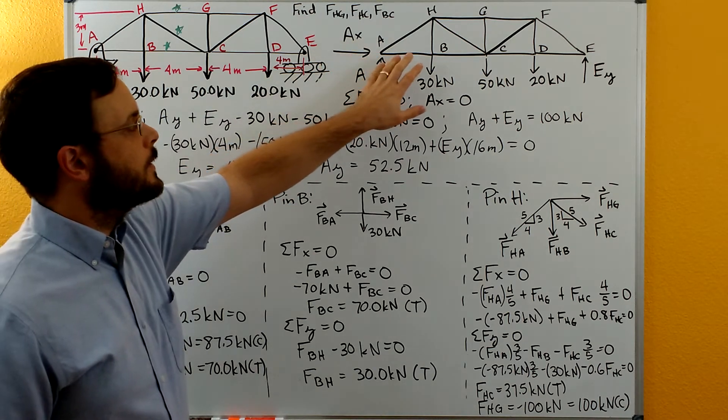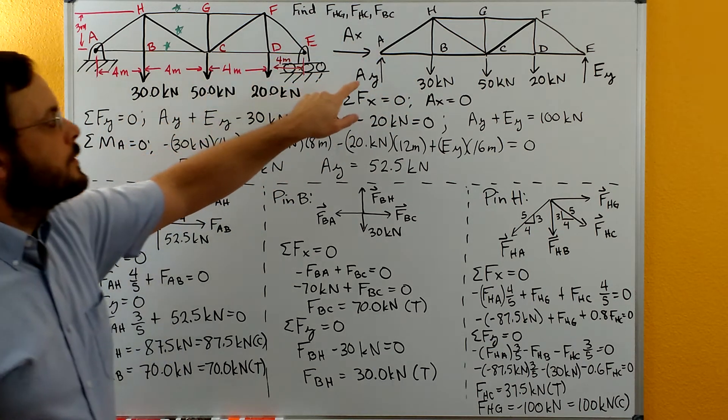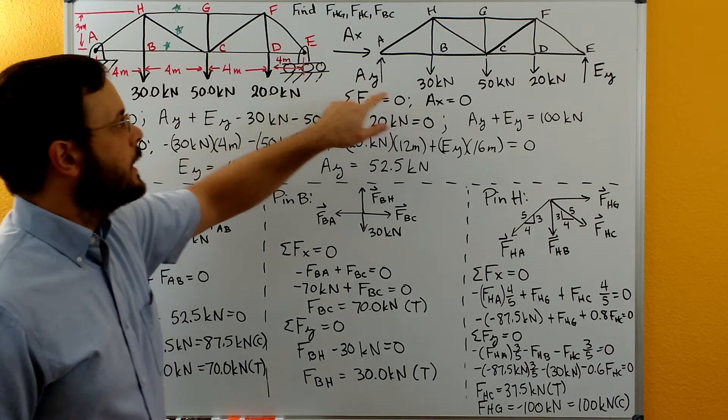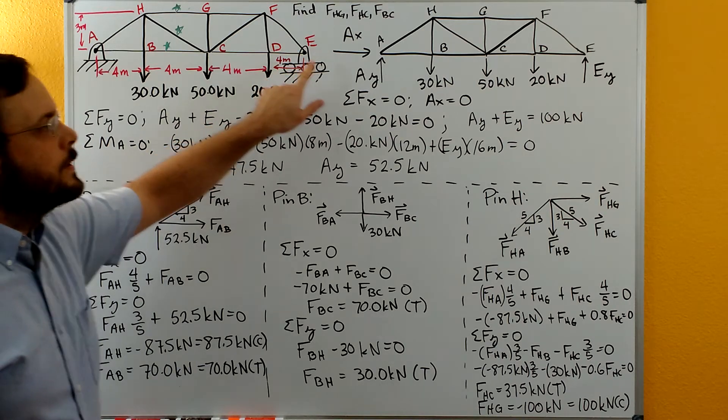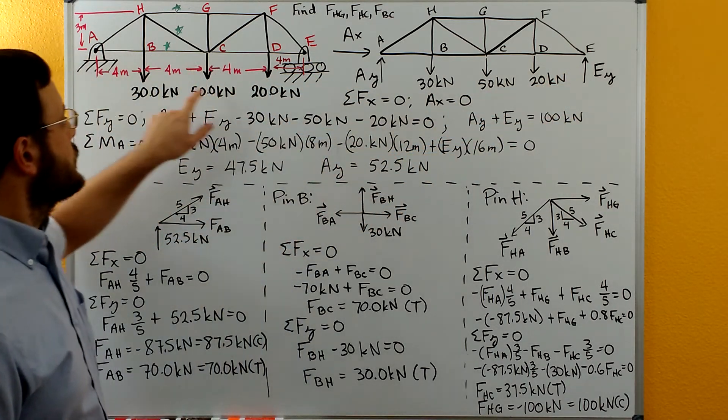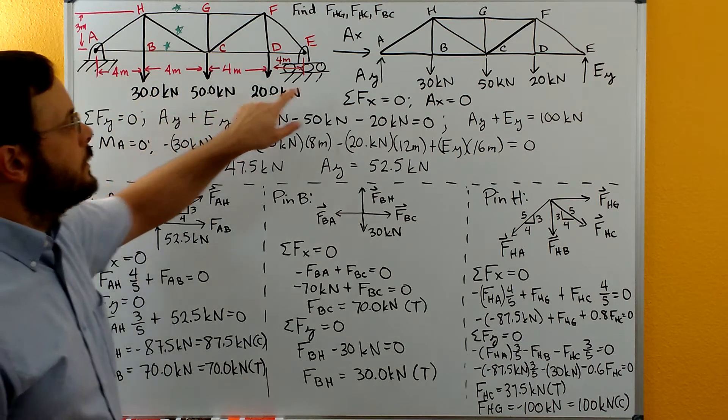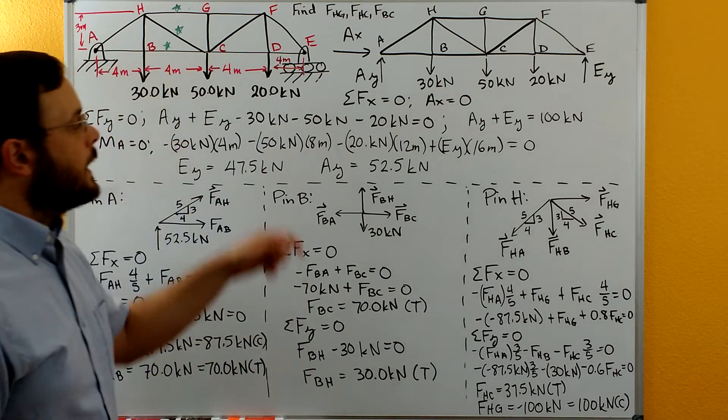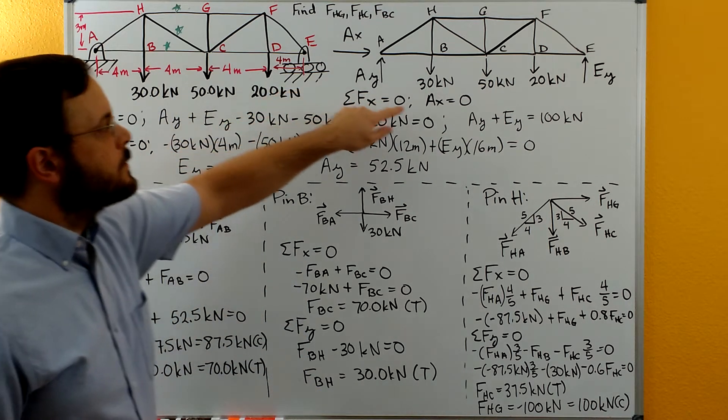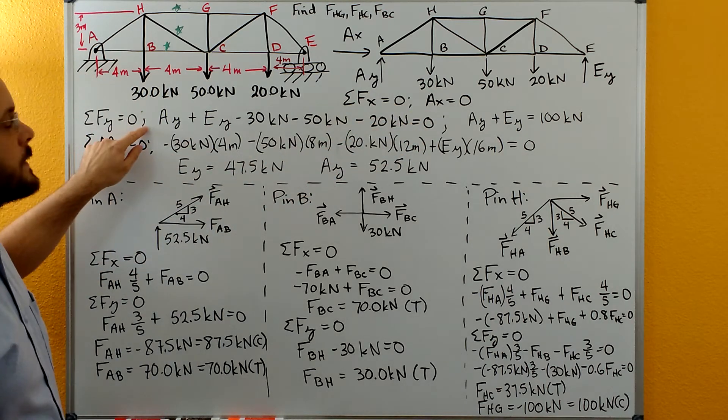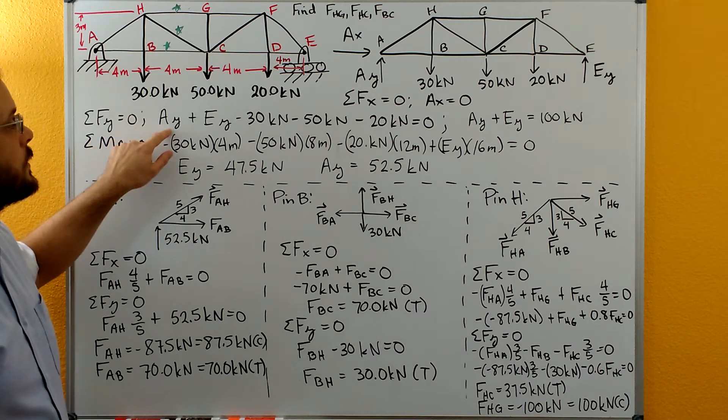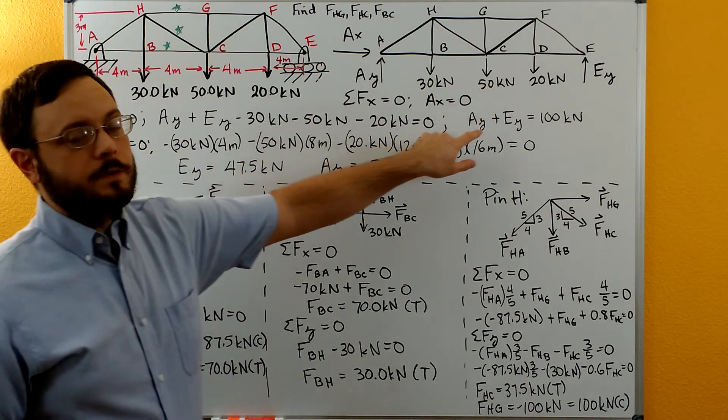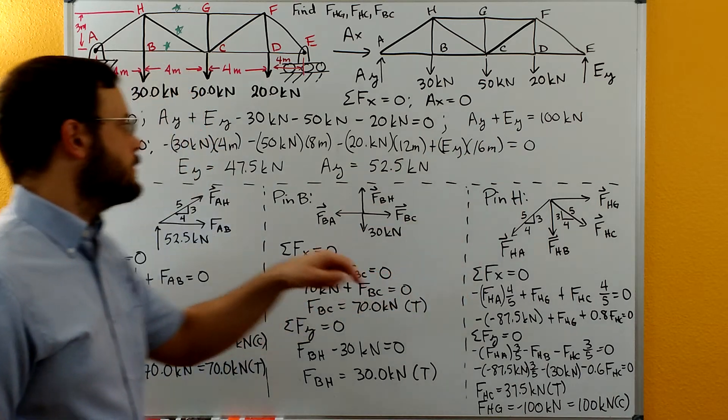We'll draw a free body diagram of the overall truss here where we have the pin at A. We'll show AX and AY, and where the roller is we just have an EY. Make sure you get all your loading in your free body diagram: 30, 50, and 20 kilonewtons. Sum of forces in X gives you that AX equals zero. Sum of forces in Y gives you AY plus EY minus all the loading equals zero, so AY plus EY equals 100 newtons.